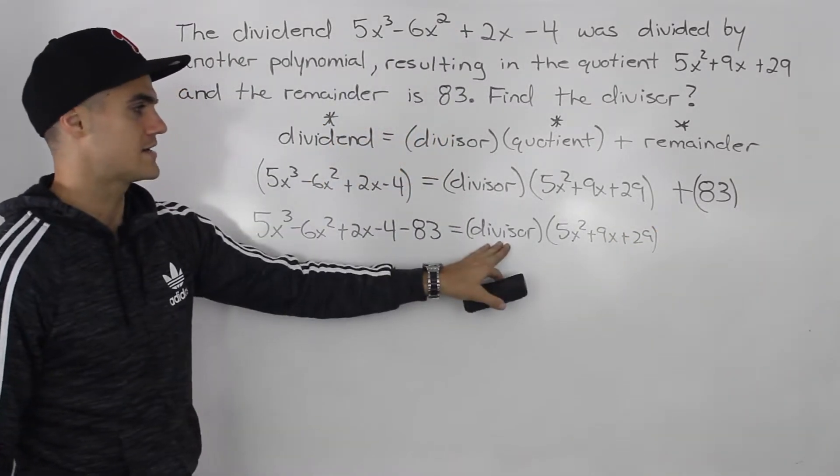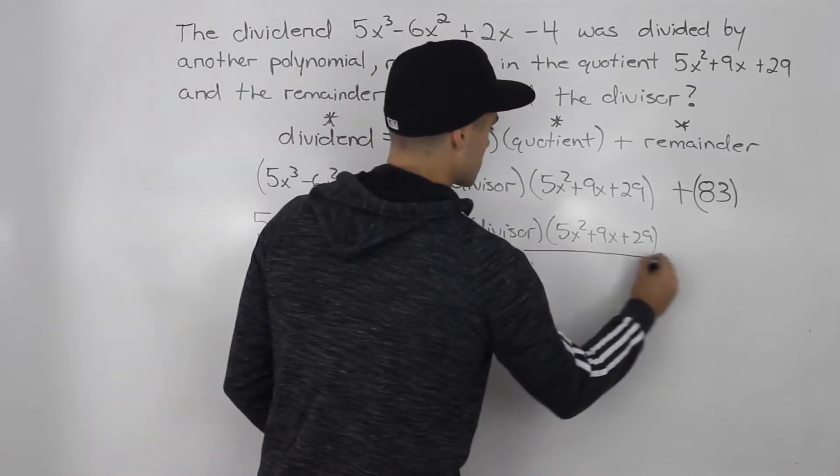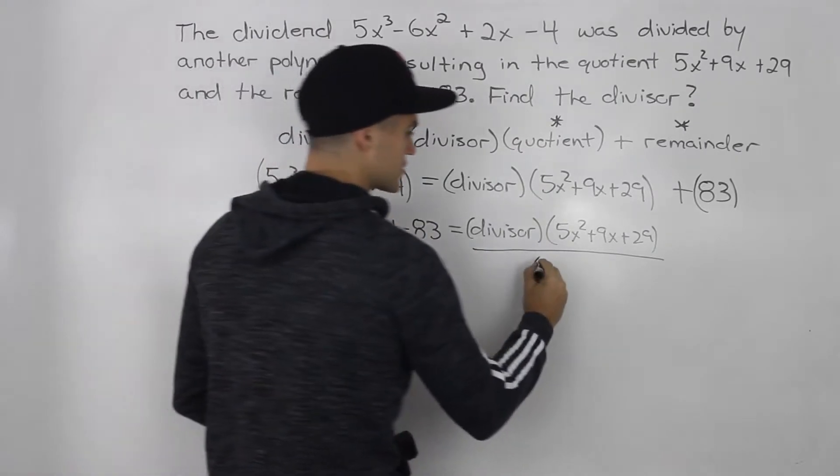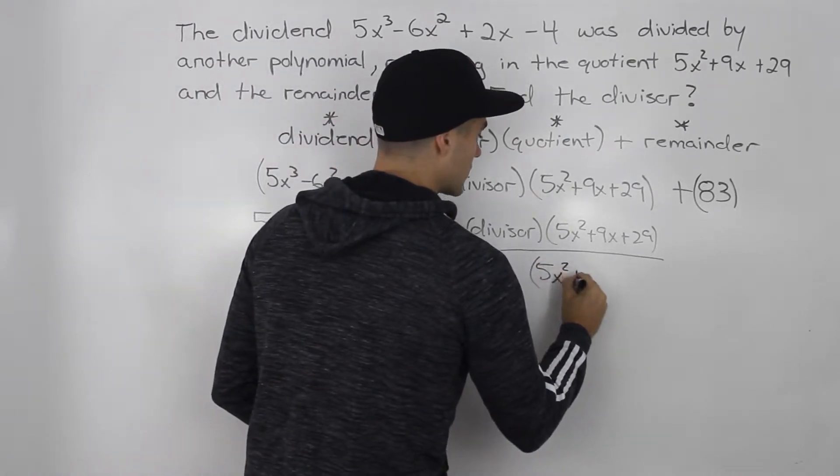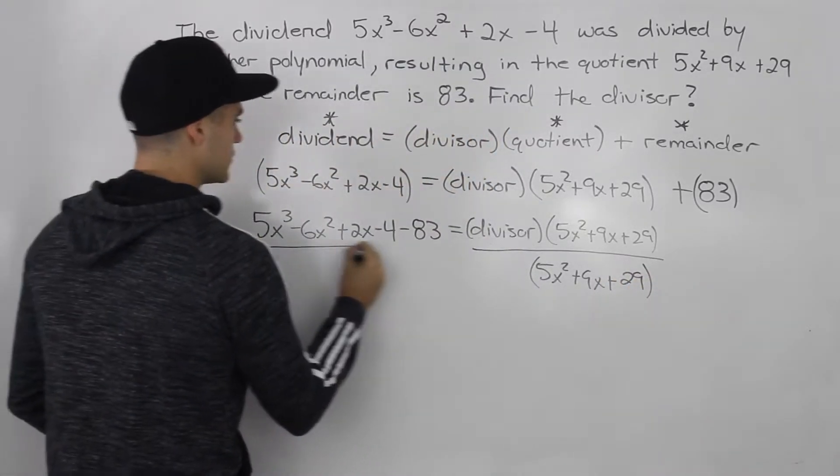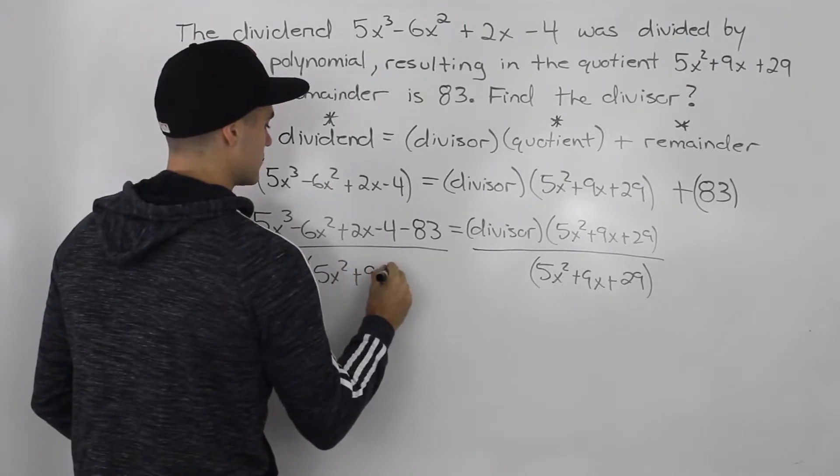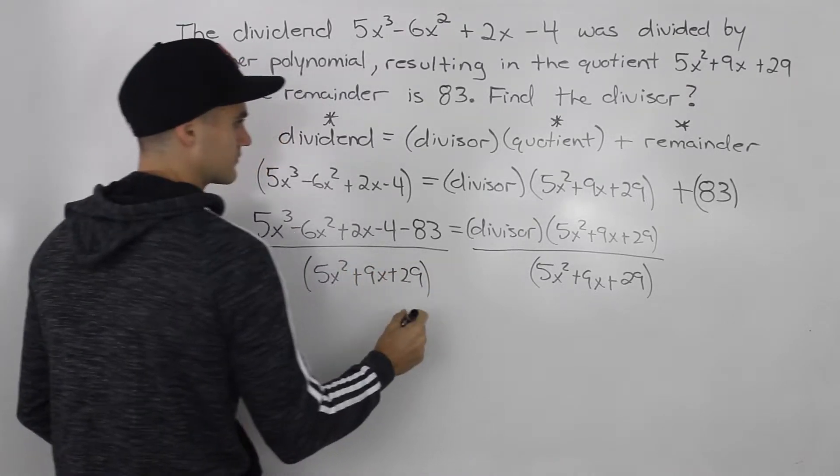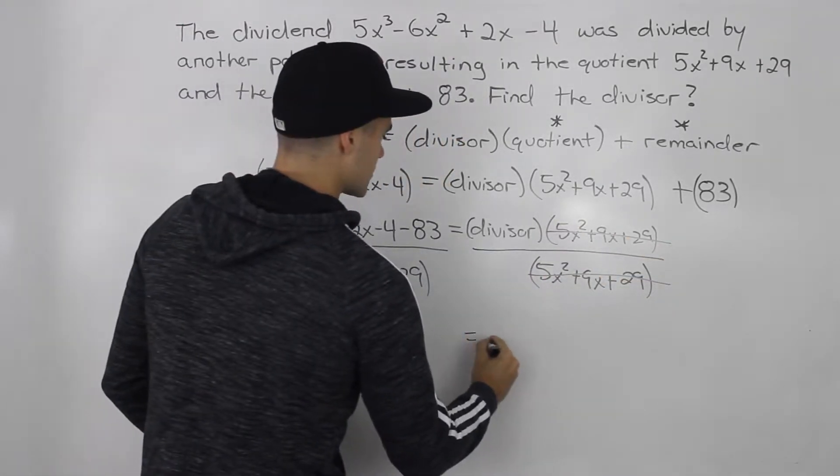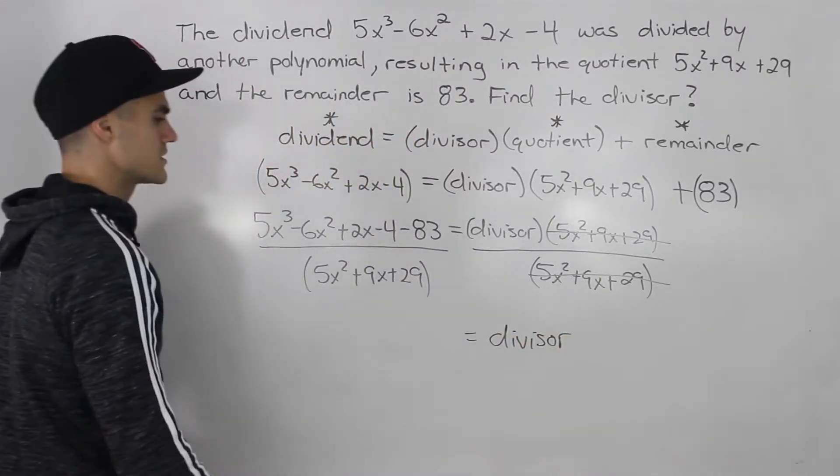And now that we have this, we're still trying to isolate for that divisor here. So what we can do is we can divide both sides by that expression that is attached to the divisor. So like this 5x squared plus 9x plus 29. So what we do to one side, we got to do to the other. So we'd have 5x squared plus 9x plus 29. So this cancels out with this.